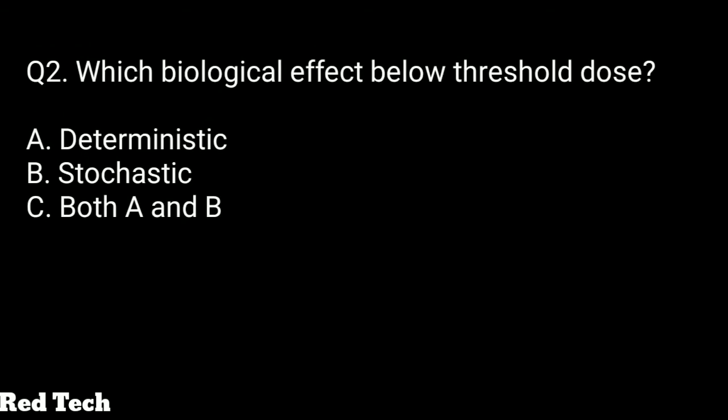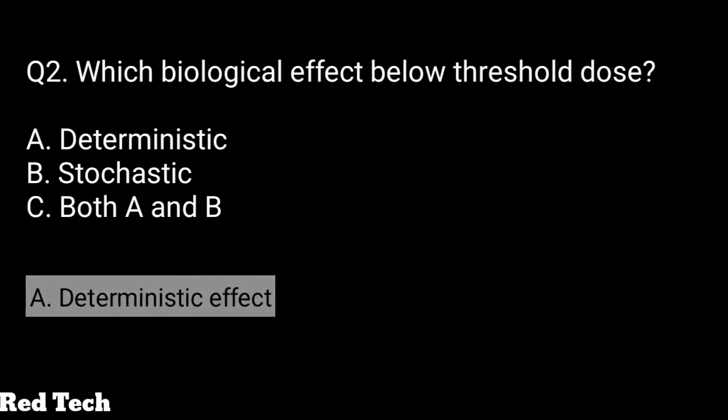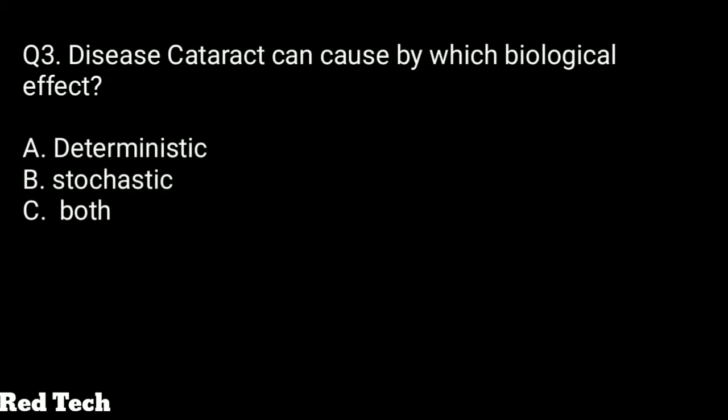Question number two: which biological effect occurs below the threshold dose? The options are deterministic effect, stochastic effect, or both A and B. The right answer is the deterministic effect — it occurs below the threshold dose.